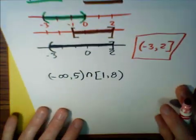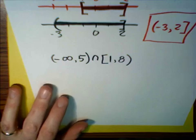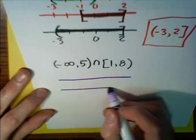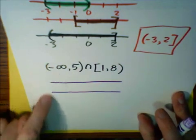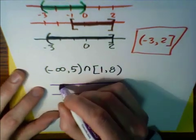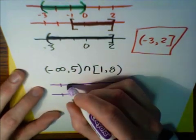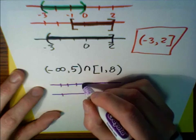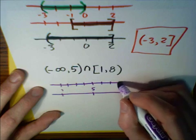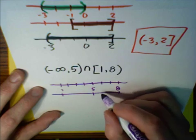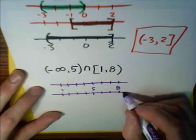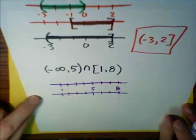How about a second example? This one uses intersection. Again, we draw several aligned number lines. Here we start at negative infinity, and we need the numbers 1, 5, and 8. Let's place 1, then 2, 3, 4, 5, 6, 7, 8. These number lines have to be lined up, but this is just a sketch — not the final drawing.